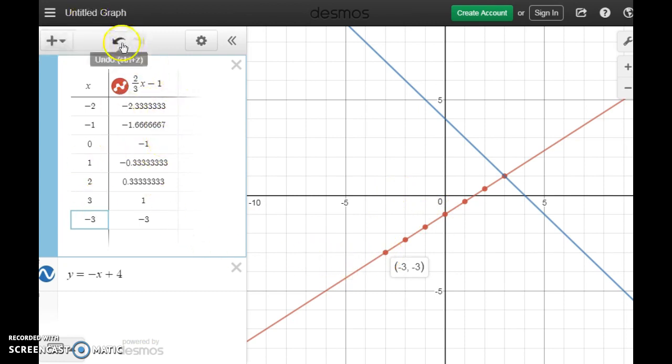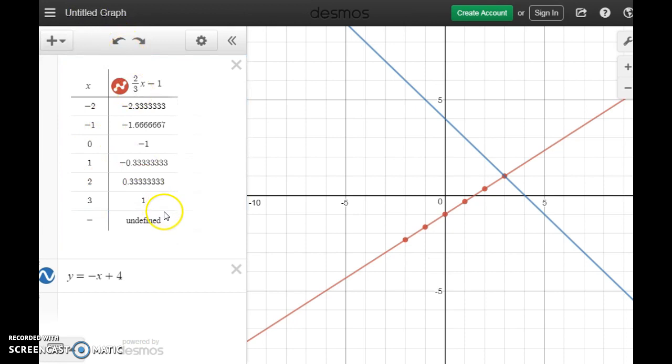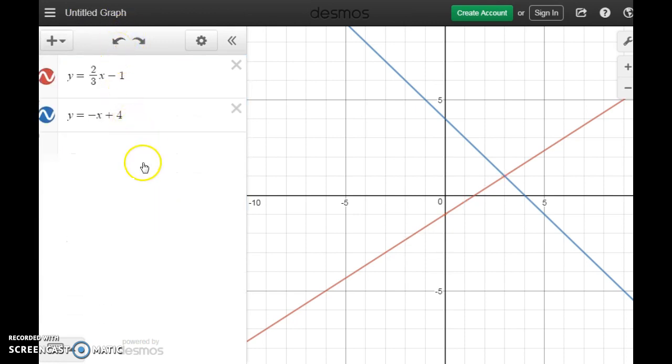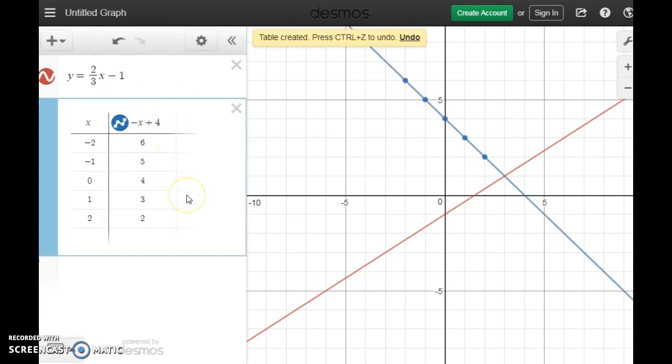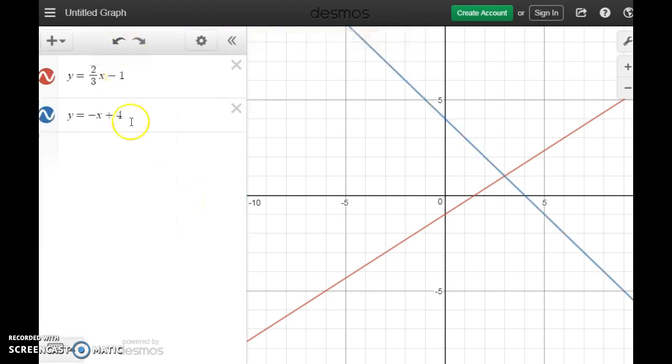When you are done using the table, if you hit this undo arrow, it will take you back all the way to your equation. And you can do the same thing here if you wanted. Open the table. Lots of points to plot. Undo to get back to your system. Make sure you have arrows on both sides of your lines. And make sure that you're labeling them so we know which line is which.